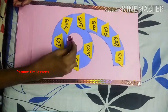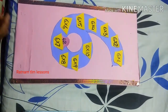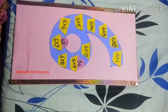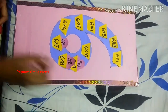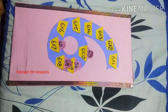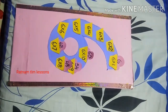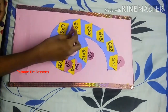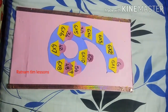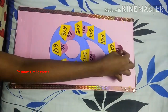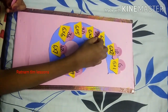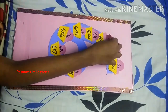6 7's are 42, 6 9's are 54, 6 8's are 48, 6 7's are 60, 6 1's are 6, 6 6's are 36, 6 5's are 30, 6 2's are 12, 6 4's are 24, 6 3's are 18.